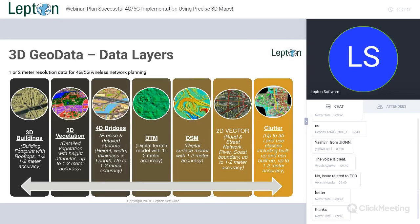4D bridge is actually a crucial data layer in 4G and 5G network planning. Why are we naming it 4D rather than 3D? When we say 4D, it will obviously have the polygon or vector layer to represent that particular bridge, plus the height information — that's the 3D information. Additionally, it will also have the width and thickness of that particular bridge. That's why it's 4D.